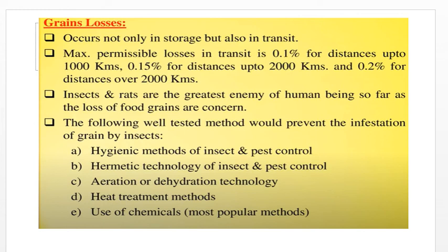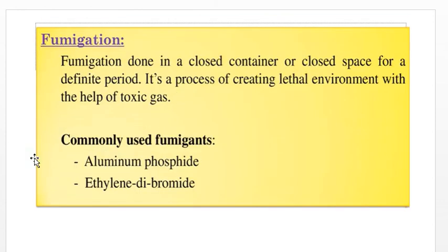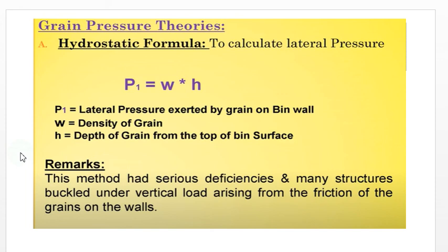The following time-tested methods can prevent infestation of grain by insects: hygienic methods of insect and pest control, hermetic technology of insect control, aeration or dehydration technology, heat treatment methods, and use of chemicals — the most popular method generally used. Fumigation is done in a closed container or closed space for a defined period; it is a process of creating a lethal environment using toxic gas. Commonly used fumigants are aluminum phosphide and ethylene dibromide.